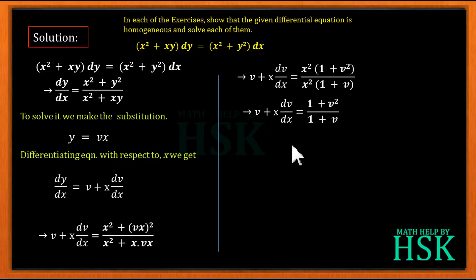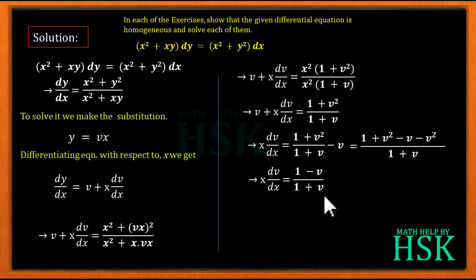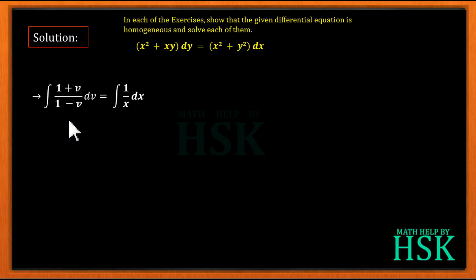After substitution and taking x² as common, the x² terms cancel, giving v + x·dv/dx = (1 + v²) / (1 + v). Rearranging, x·dv/dx = (1 + v²)/(1 + v) − v = (1 + v² − v − v²) / (1 + v) = (1 − v) / (1 + v). This substitution has converted the homogeneous equation into a variable separable form. Separating variables: (1 + v)/(1 − v) dv = (1/x) dx.